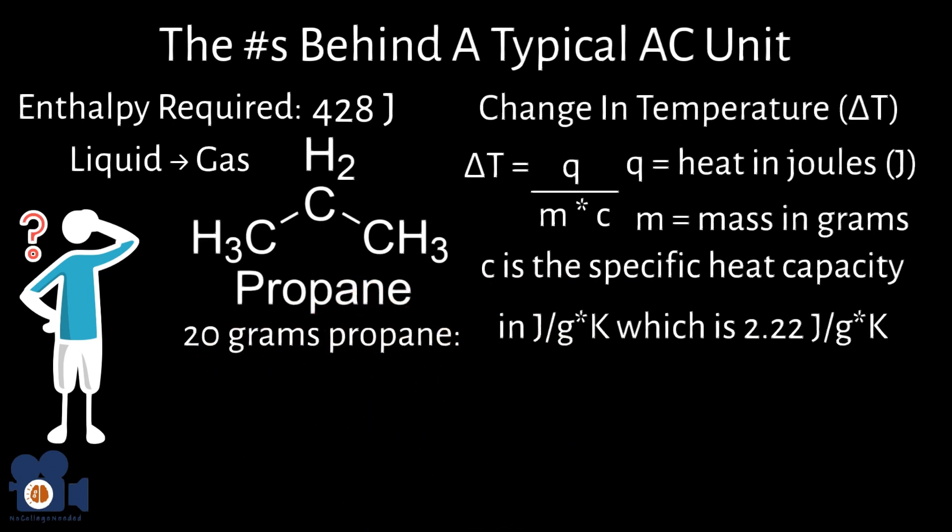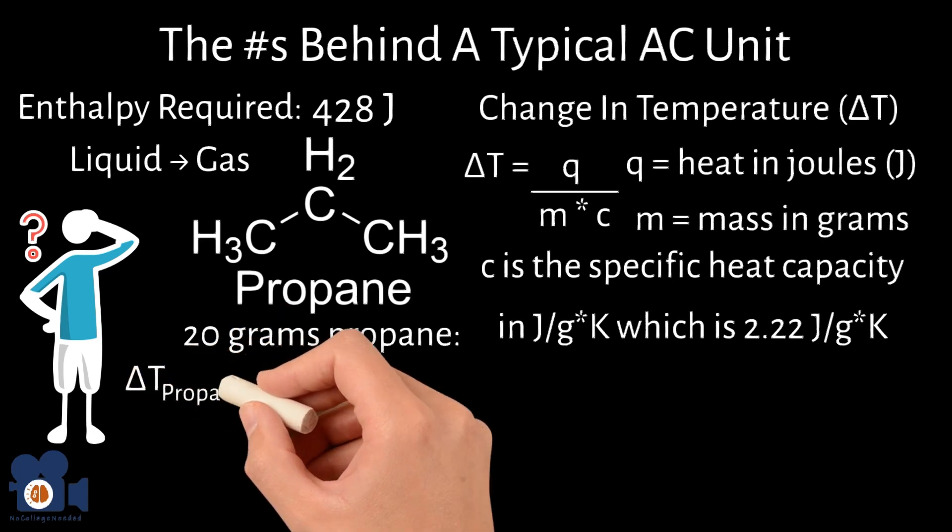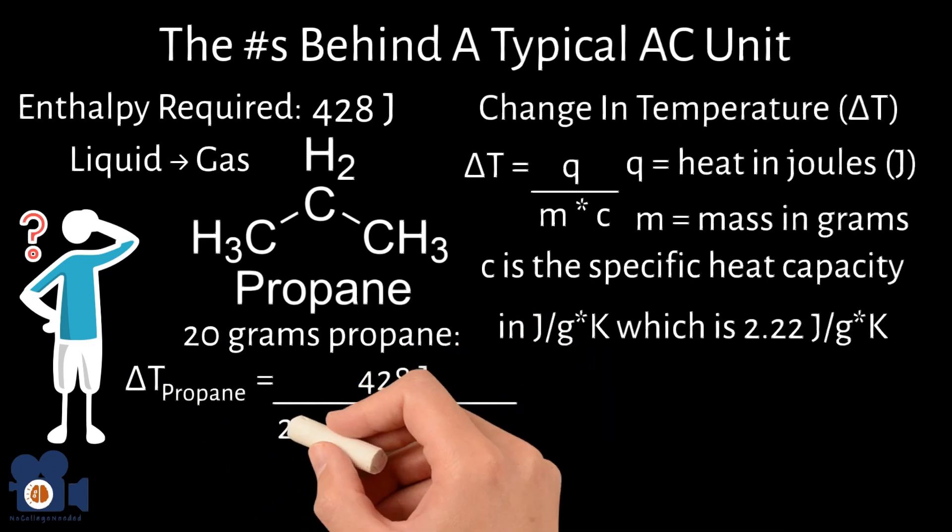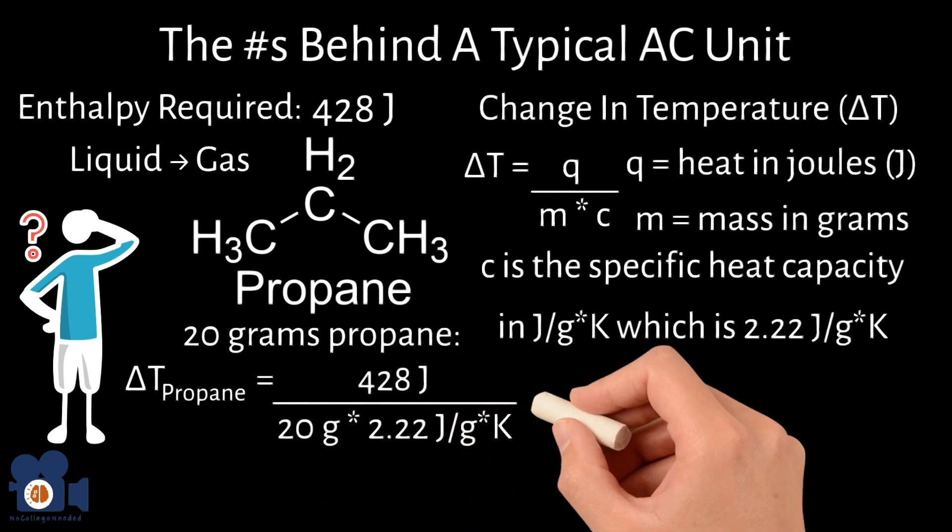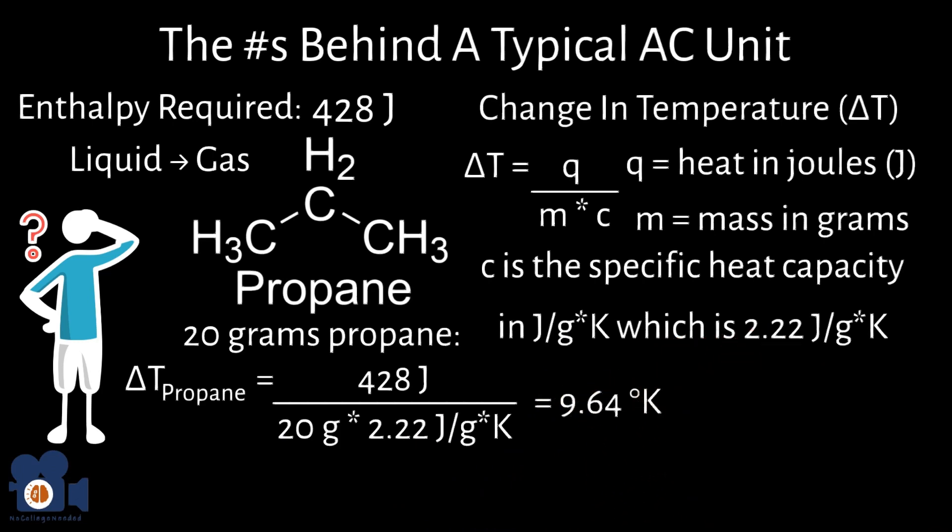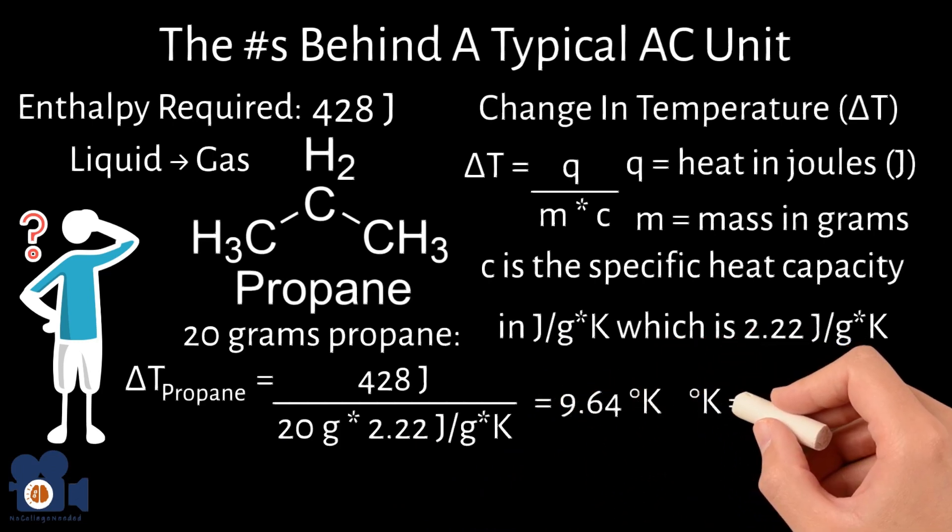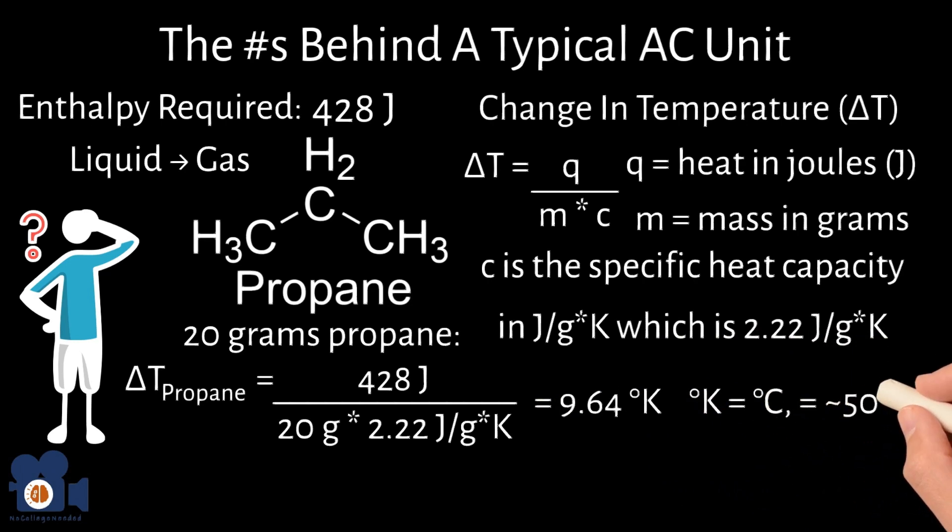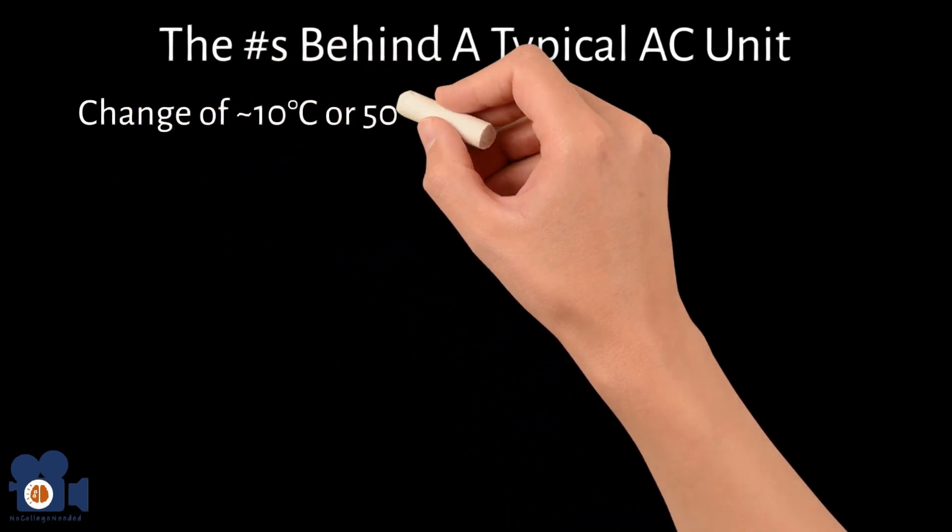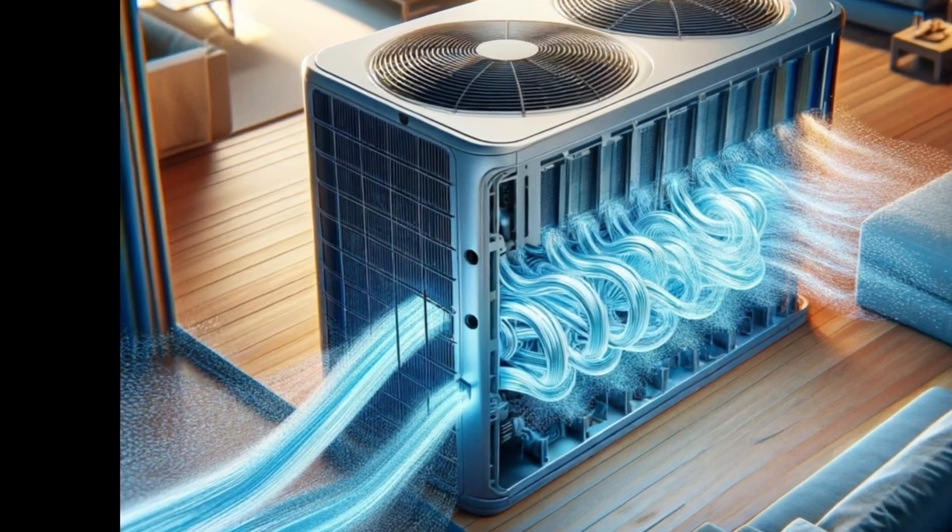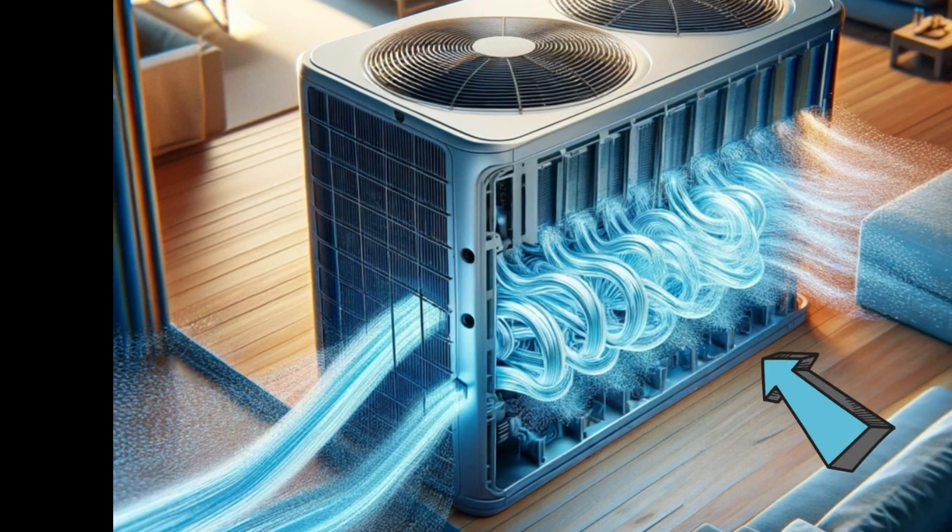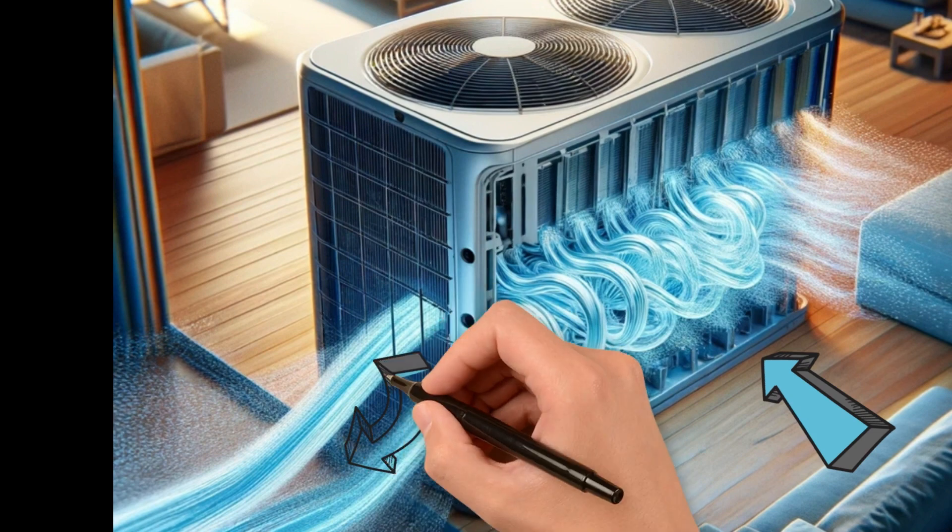Plugging these numbers into the equation for 20 grams of propane, this might not seem like much, but in its gaseous state, it's approximately 10 liters. Delta T equals 428 divided by 20 grams times 2.22 joules per gram Kelvin equals 9.64 degrees Kelvin, which equals degrees Celsius, converting that to Fahrenheit is close to 50 degrees. This change of approximately 10 degrees Celsius or 50 degrees Fahrenheit is what allows the refrigeration to work because the AC unit can blow air over the colder propane, which cools that air that then pumps into your room.